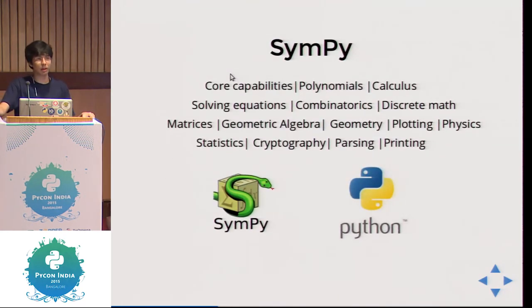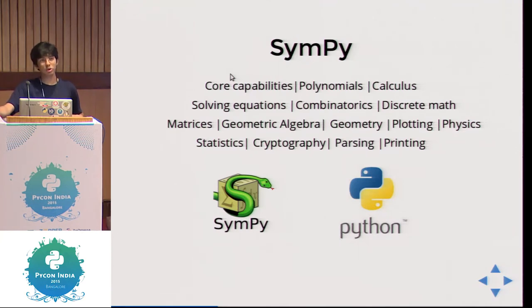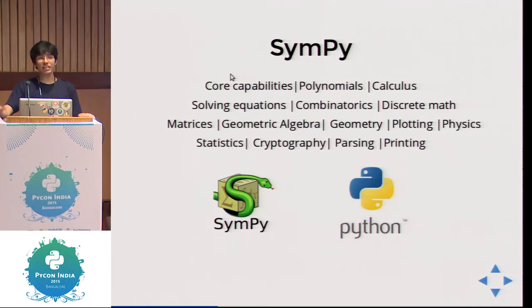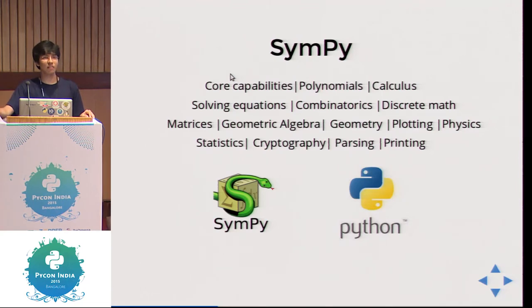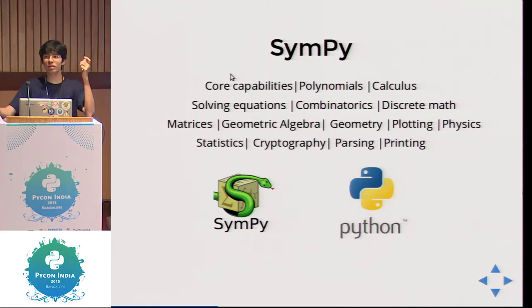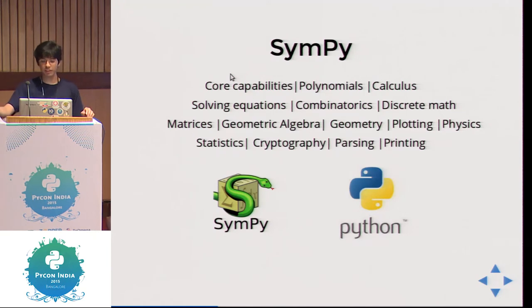SymPy has the following modules: core capabilities for writing and manipulating expressions, polynomials, calculus, combinatorics, discrete maths, geometry, and physics — which is very interesting. There is also quantum physics, still at a beginning stage with not much implemented. There is a spin-off project from SymPy called PyDy by Jason Moore, a physics professor working on Python dynamics — solving mechanics problems like free body diagrams. There is also statistics, cryptography, and parsing and printing modules supporting Unicode, LaTeX, and even XML output.